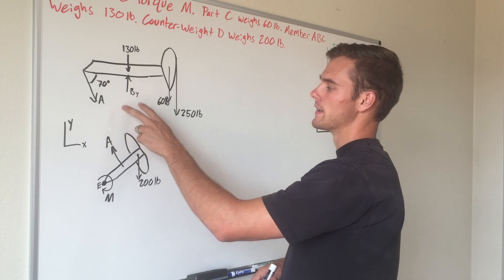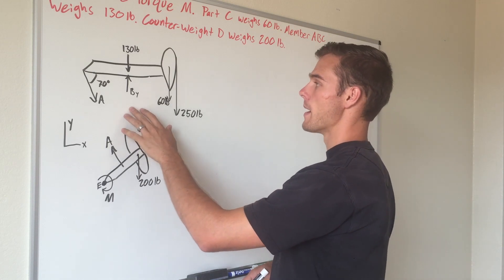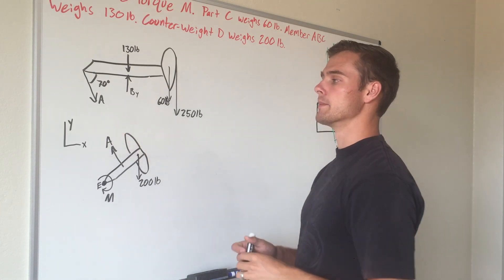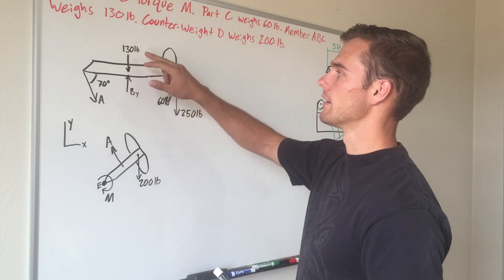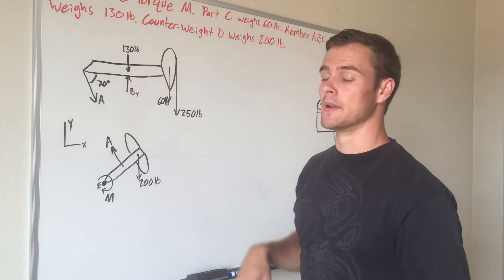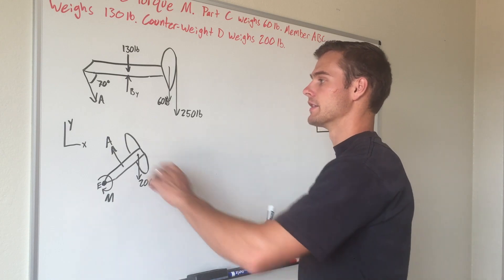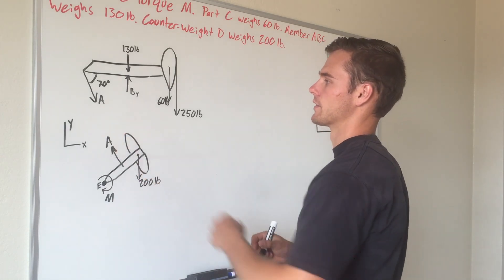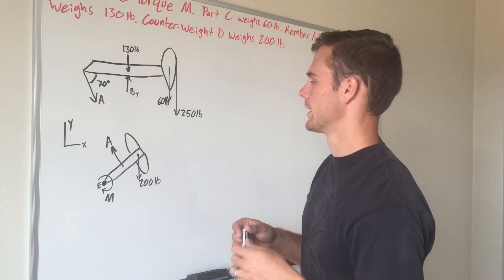If we sum moments about point B, this will cancel out the 130 pounds and this Bx and By because they won't cause rotation, leaving us with just the A force as the only unknown.